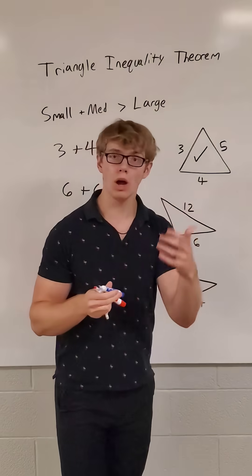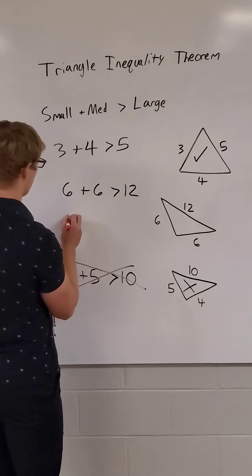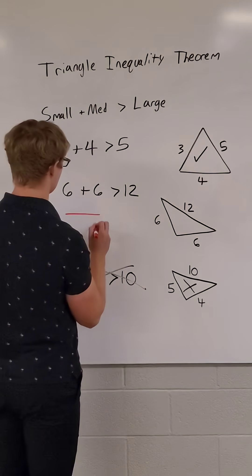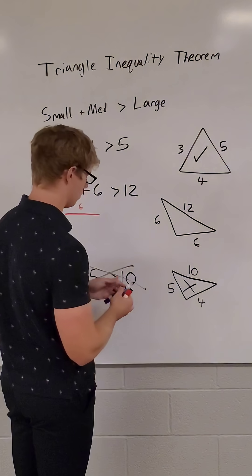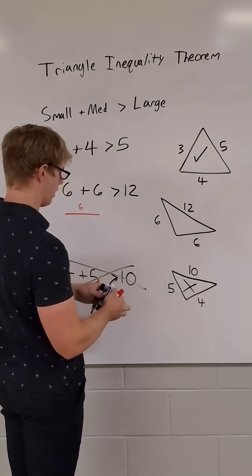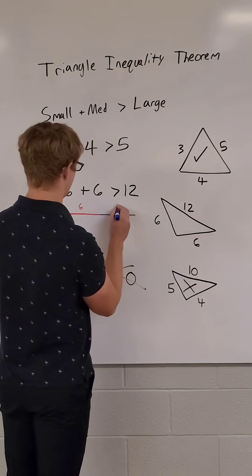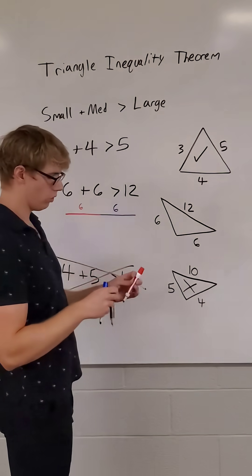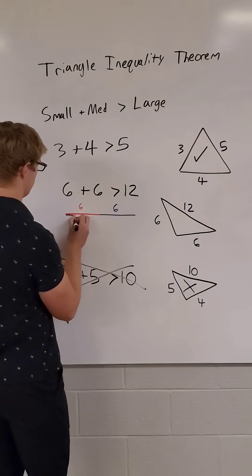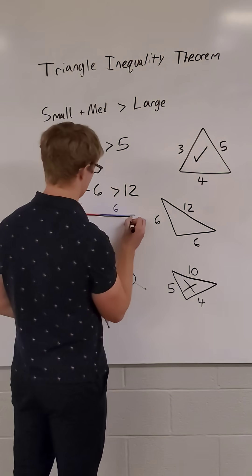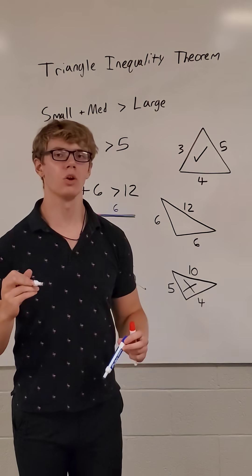Let me show you why. So if I were to take these markers here, and I'm going to draw a line that is 6 inches long. Then I'm going to use this blue marker and draw another line that is 6 inches long. Now I'm going to draw one that is 12 inches long. That is not a triangle, that is a straight line, and that does not work.